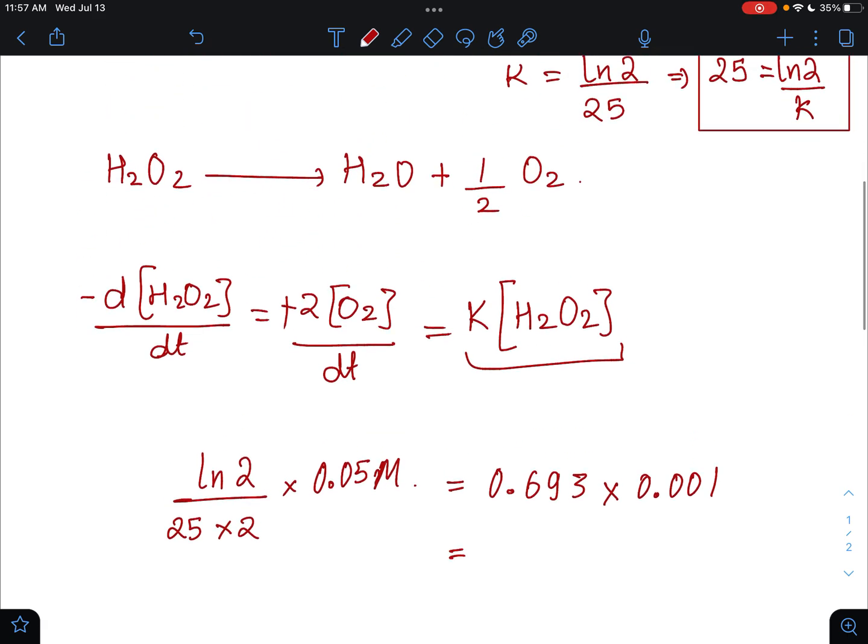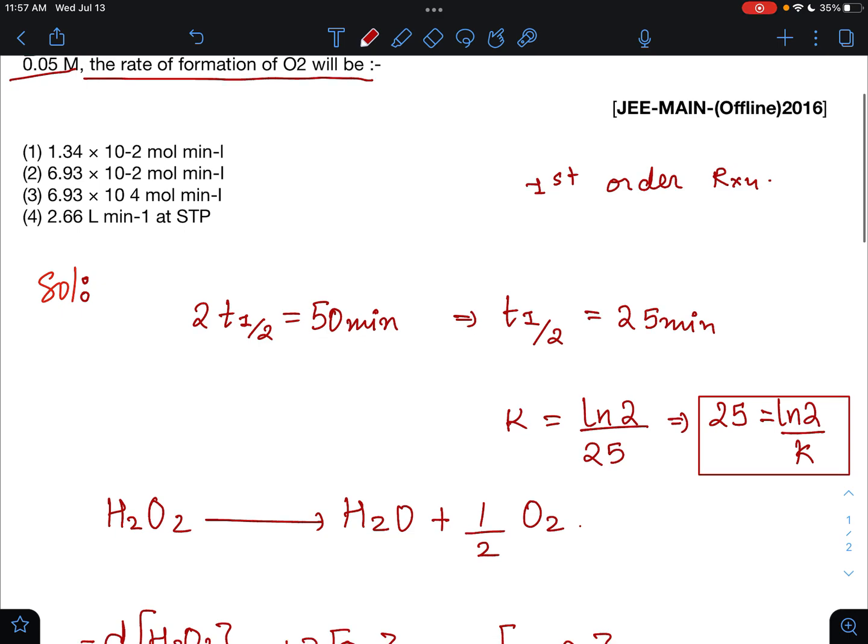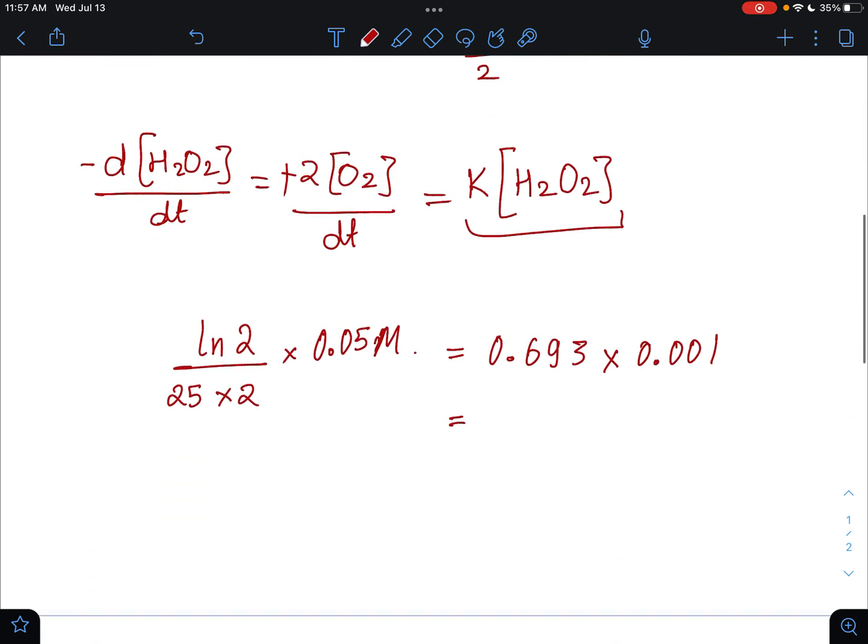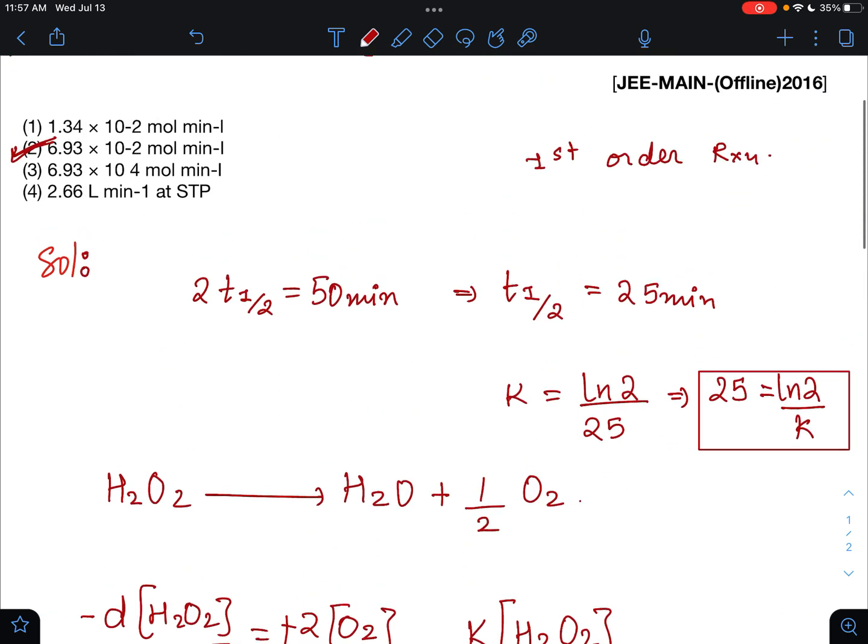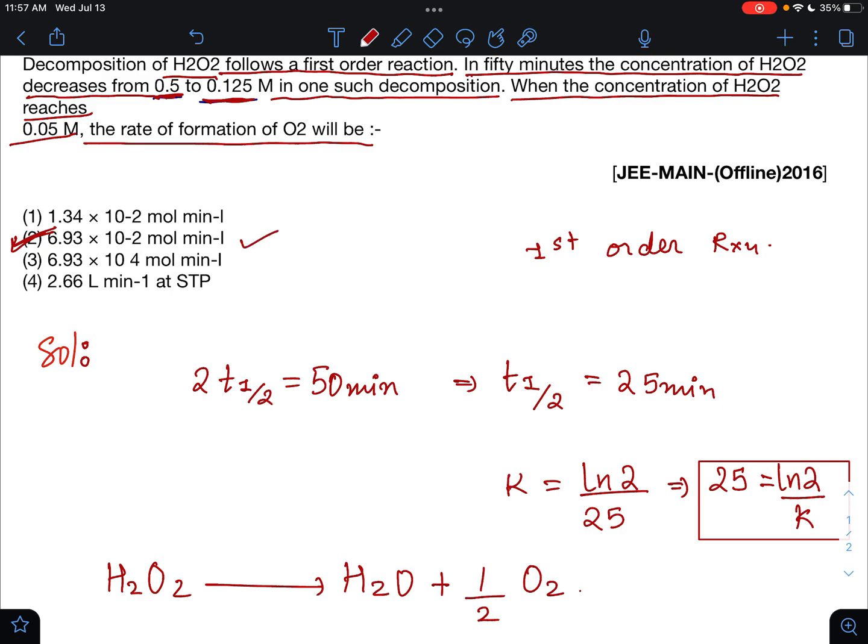Now our answer will be second option. We will get that 6.93 into 10 raised to the power minus 2 inverse. Second one will be our answer. Thank you.